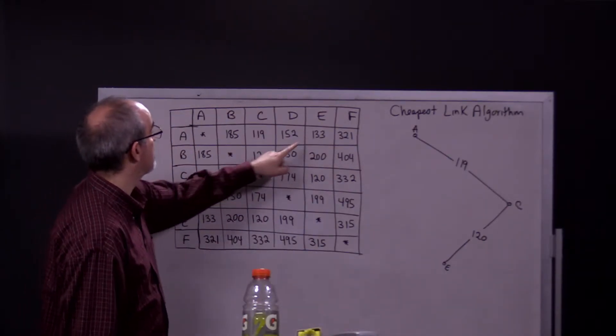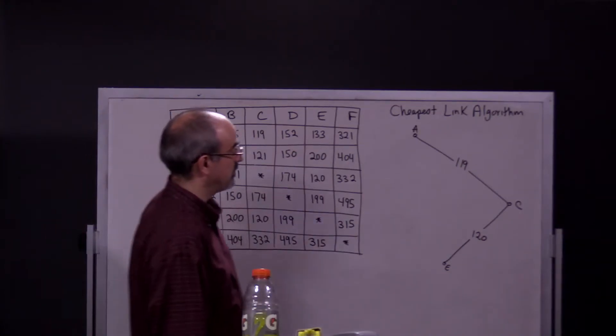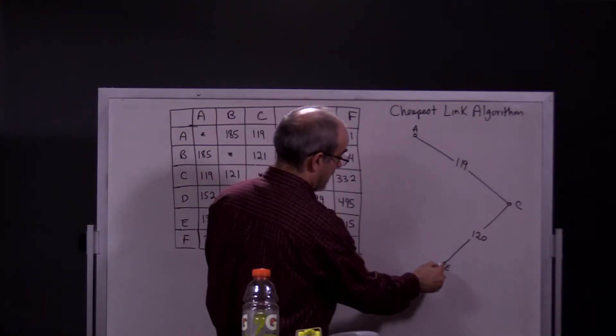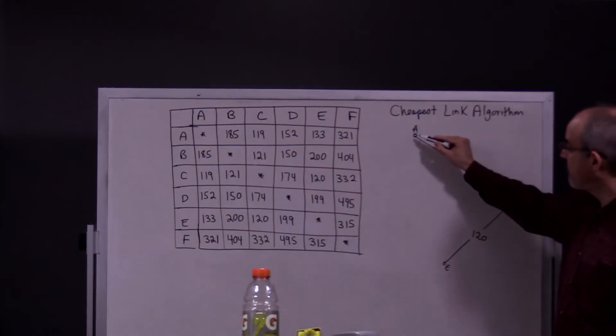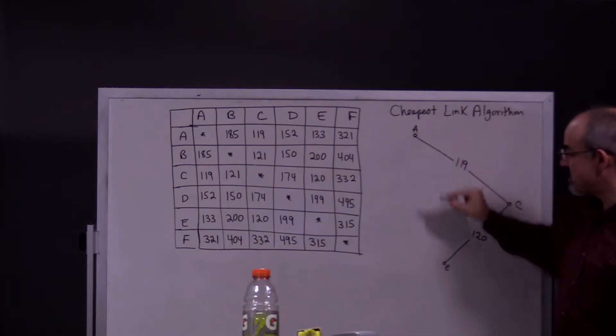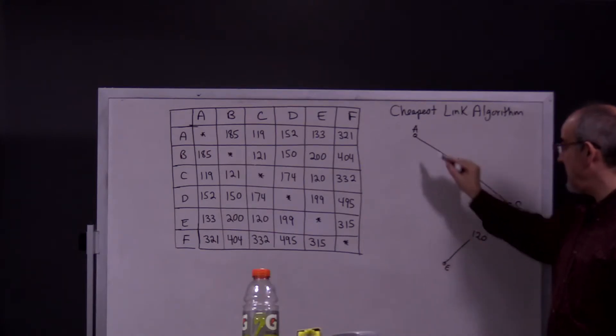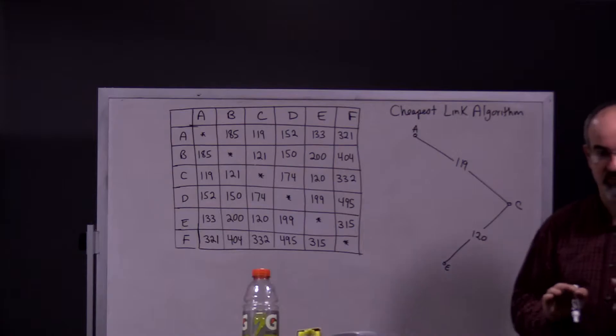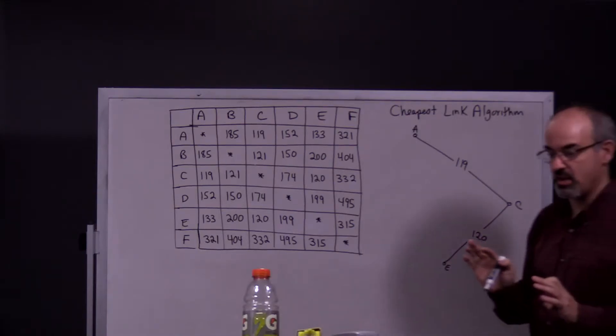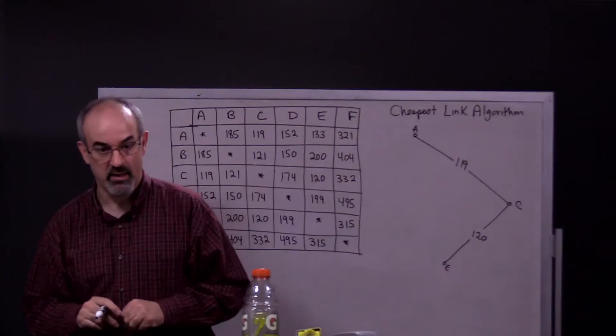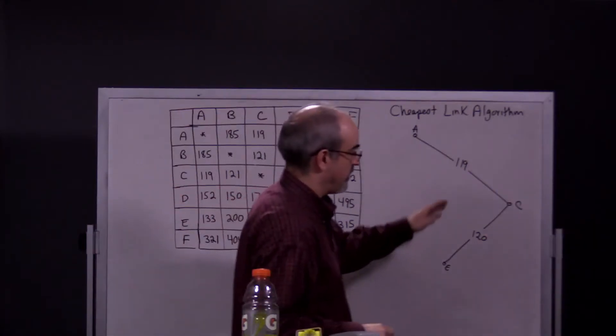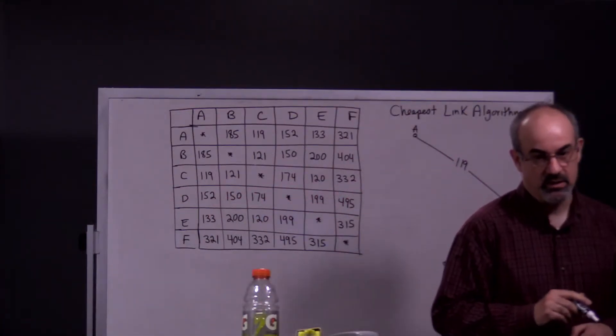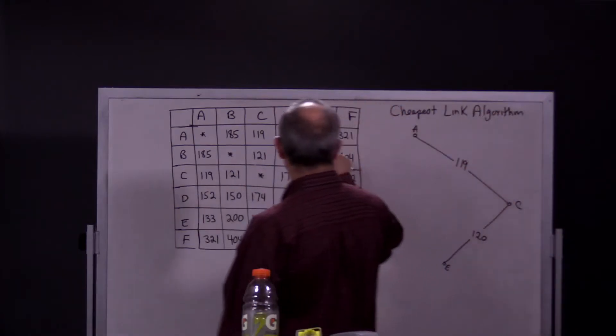So the next shortest edge is A to E, but we're not allowed to do that either because this is a good example of what it means to close off the circuit before you're done. We're not allowed to use that edge because it closes off a circuit. That means E, A, and C would all have two edges going into them. And eventually, since we haven't finished the whole Hamilton circuit yet, one of those edges would have to have another edge either going back to it or leading out of it, which would give it three edges going into it, which you're not allowed to do. So we can't use this edge either.